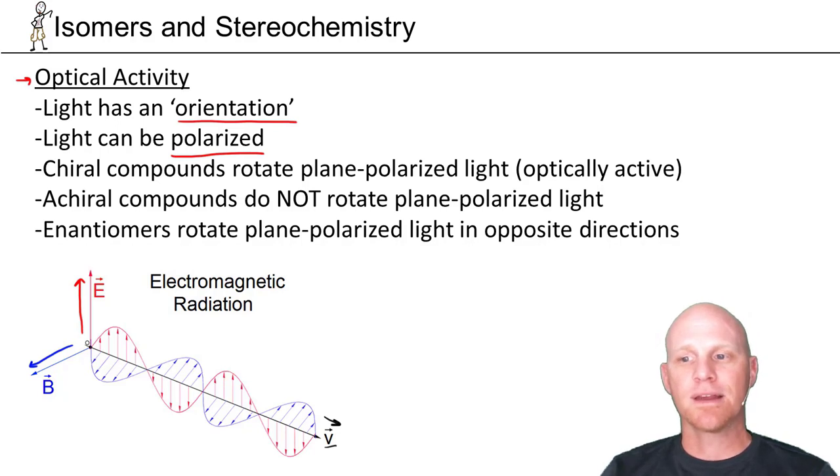It turns out if you shine that plane-polarized light through a solution containing a compound that is chiral, that light is going to get rotated.